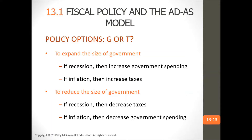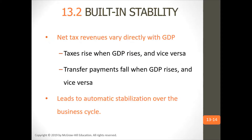If there's a recession, they can increase government spending. If they want to reduce the size of the government, they can decrease government spending. Net tax revenues vary directly with GDP — taxes rise when GDP rises and vice versa, and transfer payments fall when GDP rises, leading to automatic stabilization over the business cycle.